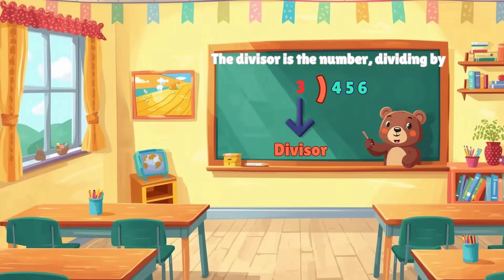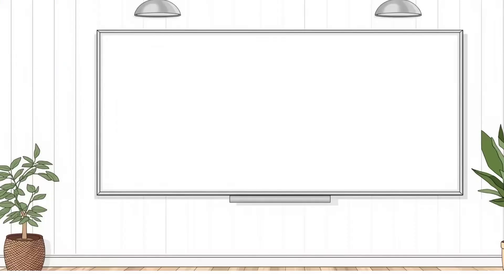You are dividing 456 into three equal parts. First, set up the long division, place 456 inside the bracket and 3 outside to the left.